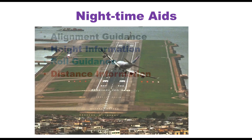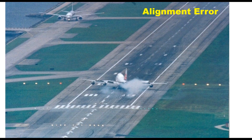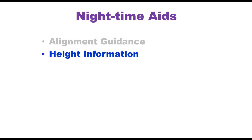Alignment guidance is required because most runways are 45 to 60 meters wide and 900 to 4000 meters in length. When viewed from a distance, it appears like a narrow ribbon. The pilot must know whether the aircraft is heading in the correct alignment. If the aircraft is not aligned to the center line of the runway, it may go off the runway.